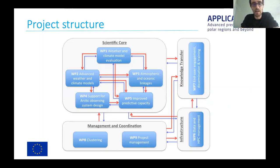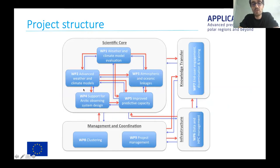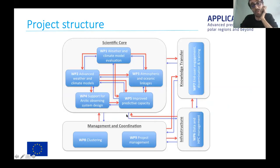In work package two, they are dealing with improving the models and testing different developments. Work package three involves pacemaker experiments to look at and establish the linkages between the Arctic and the mid-latitudes. Work package four is about observations and how to benefit most from them — things like testing new initialization methods or data denial experiments to see which observations contribute most to skill. And work package five, the one I'm involved in, is about improving the prediction capacity.